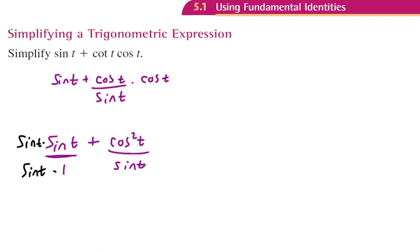Sine of t times sine of t is going to give us our sine squared of t plus—and then we have over here cosine squared of t. Oh! We all know what that means now hopefully. Sine squared plus cosine squared is just uno!